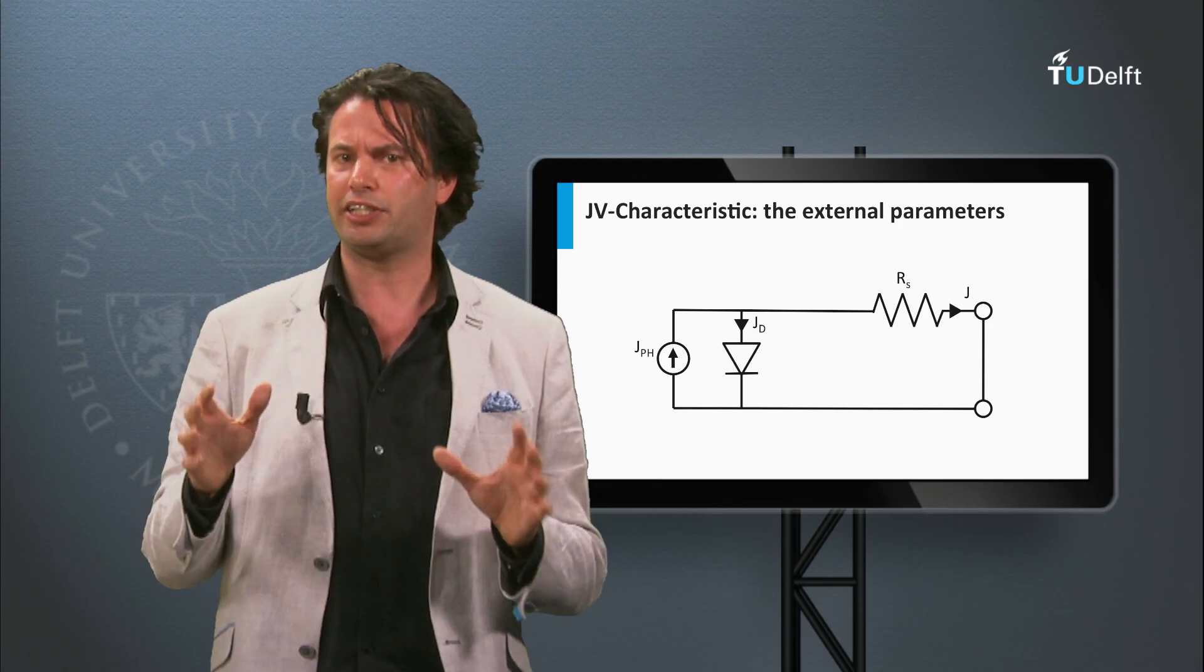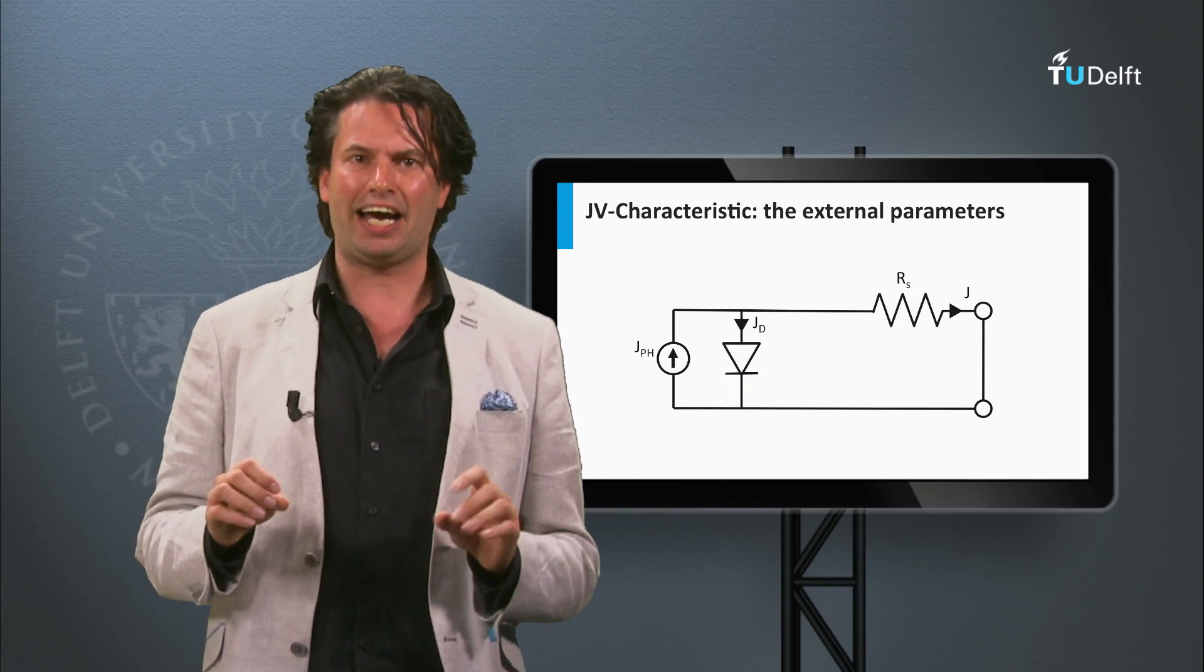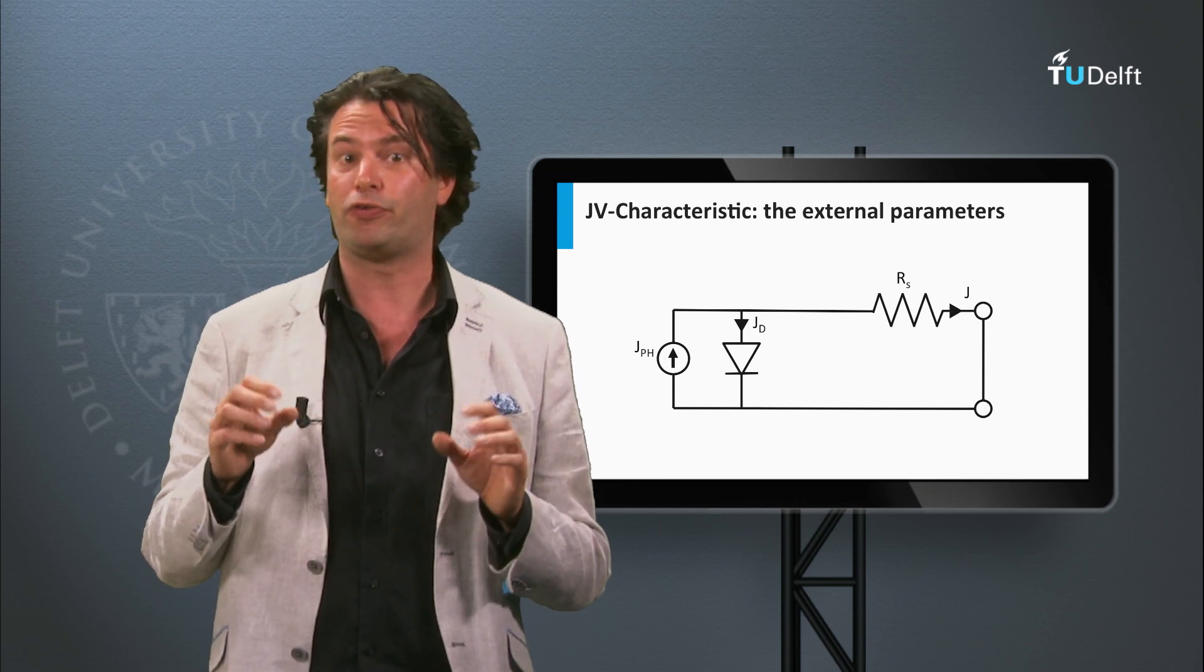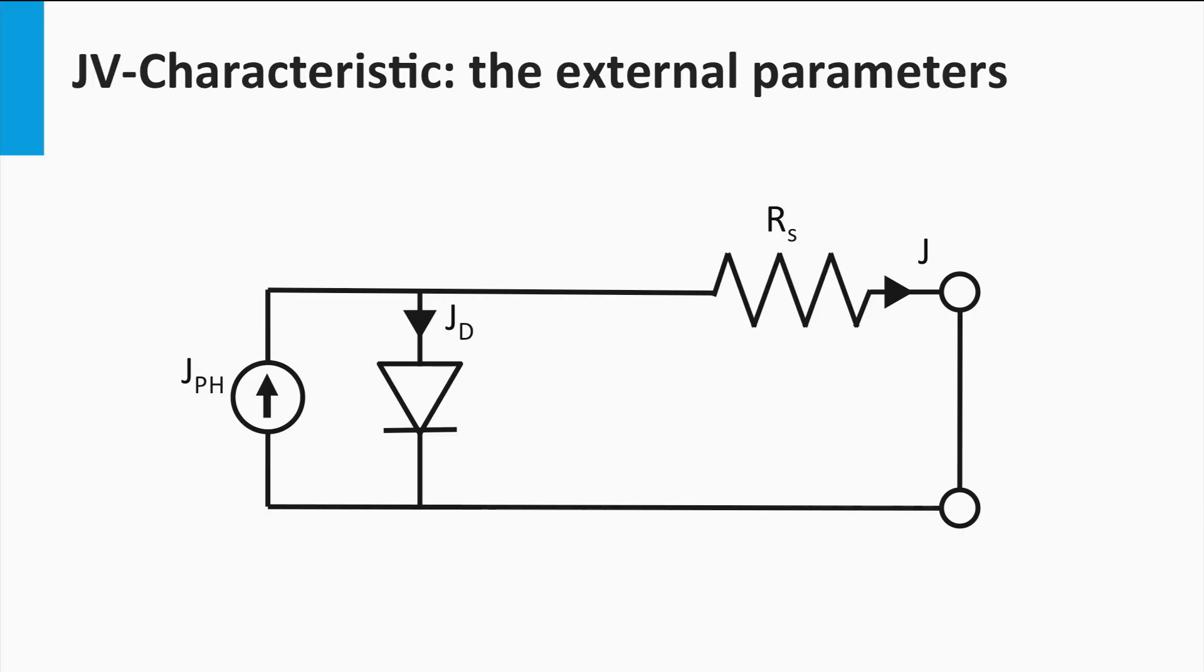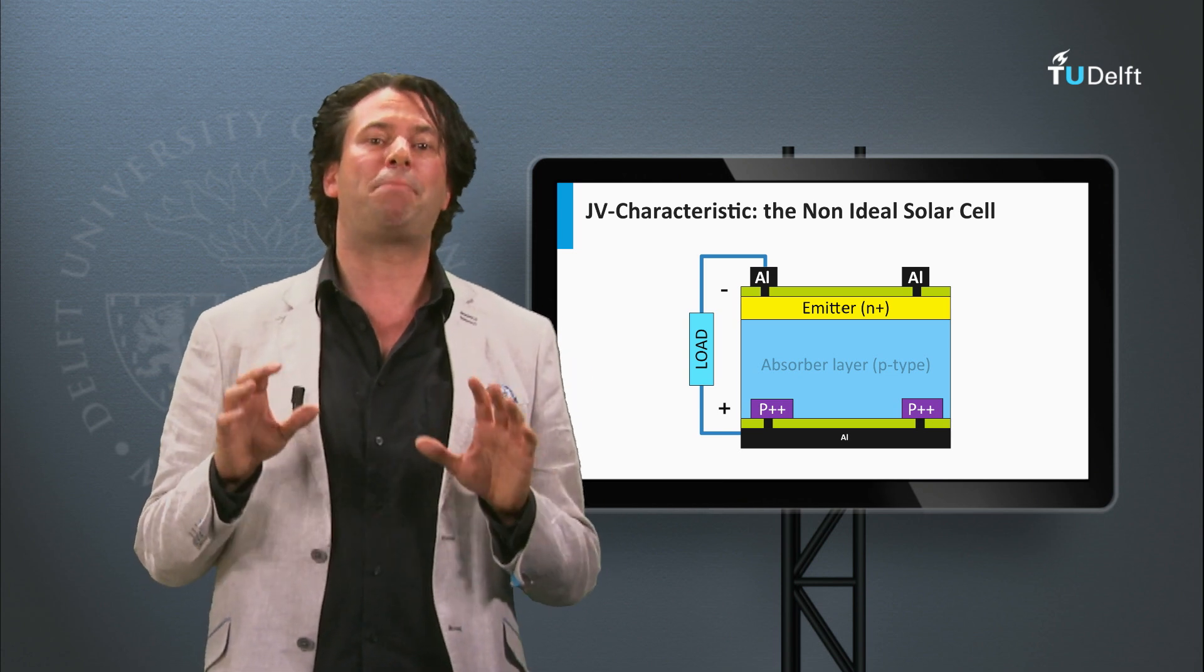How does the series resistance appear in an electric circuit? Here we will use a zigzag line as a symbol for the resistor. Note that sometimes a rectangle is used as a symbol for resistor as well. As discussed earlier, the ideal solar cell is a parallel connection of a current source and a p-n diode. The series resistance is, as the name already reveals, connected in series with these two elements. If the solar cell generates current, the solar cell will lose voltage over the series resistance.